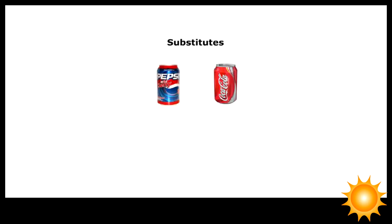Two goods, say C and D, are substitutes if using more of good C replaces the use of good D. For example, Pepsi-Cola and Coca-Cola are substitutes.